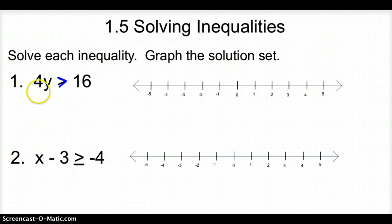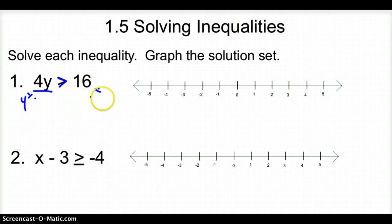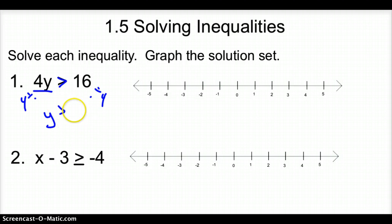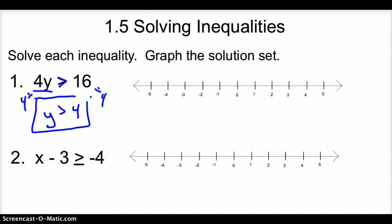To solve this as an equation, we divide both sides by 4 to get y by itself. Now we have y, but instead of an equal sign it is a greater than sign, and 16 divided by 4 is 4. So y > 4 is our solution to the inequality, and now we just have to graph it.